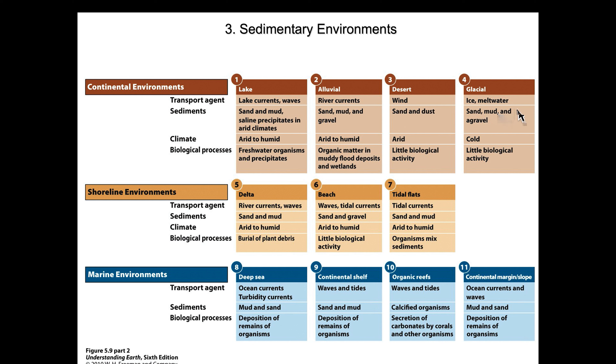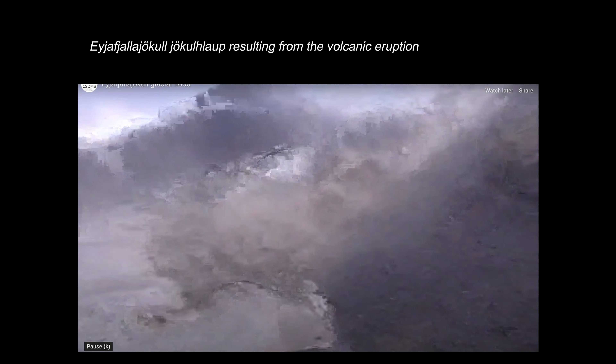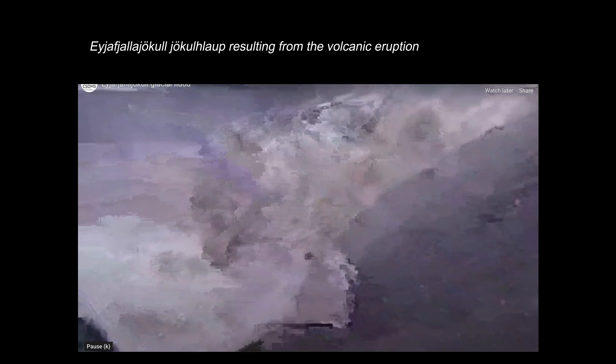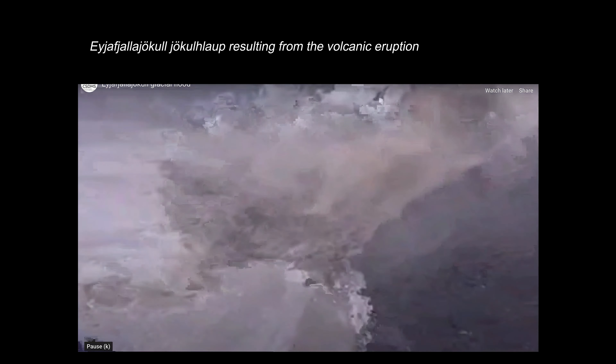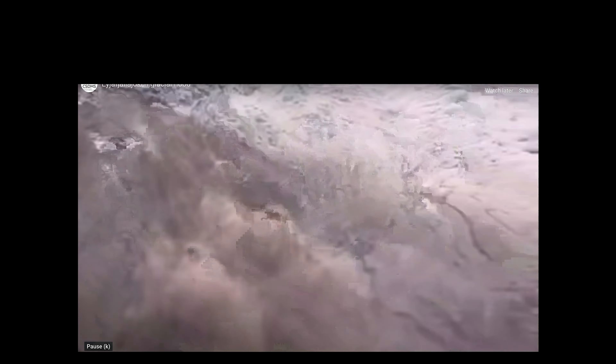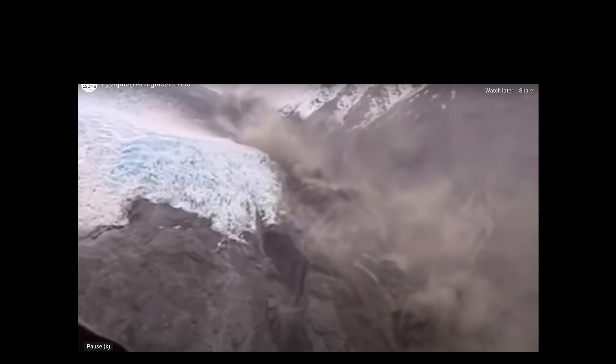In glacial environments, ice and meltwater are the mechanisms to move material. In the case of the Vatnajökull in Iceland, when that volcano erupts, more ice is melted and released than all the fresh water in all the rivers of the world — and that can last for a couple of weeks. In a jökulhlaup, when a volcano erupts under ice, blocks of material can be the size of a school. The climate is cold, with little biological activity.